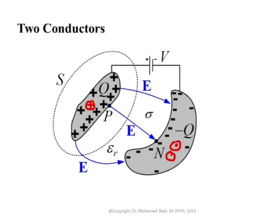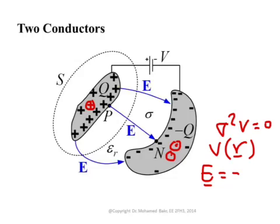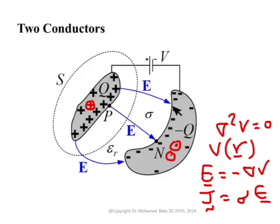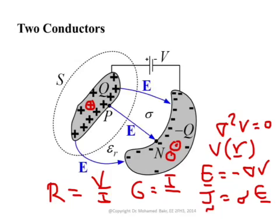We already know Poisson's equation, so we start with the Laplace equation: ∇²V = 0. We solve it to get the potential as a function of r. Once we have the potential, we get the electric field as E = −∇V. Once we have E, we get the current density J = σE. Then we integrate J over a surface surrounding one of the conductors to get the total current flowing from the positive conductor to the negative conductor. With total current and potential difference, we define resistance R = V/I, or conductance G = I/V.